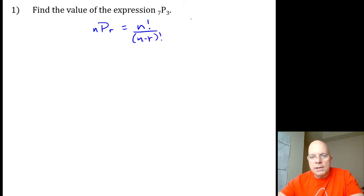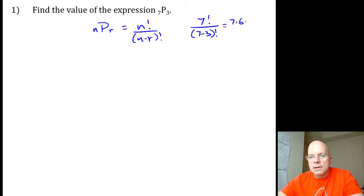So 7P3 would be 7 factorial over 7 minus 3 factorial, which is 7 times 6 times 5 times 4 factorial. I'm stopping there because I know that 7 minus 3 is 4, and my 4 factorials will cancel.